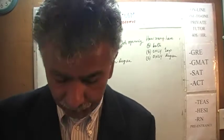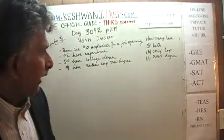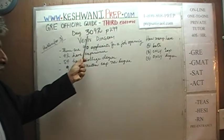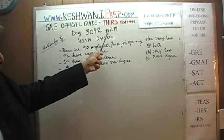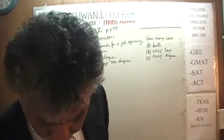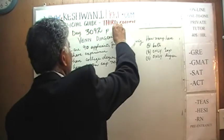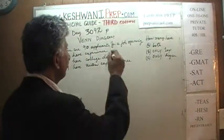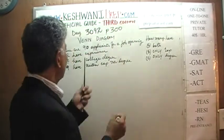Today is our lesson number 92, day 3092. The 3 is to signify that we are in the third edition, and day 92. We are on page number 300, which is where the topic of Venn Diagrams is discussed.